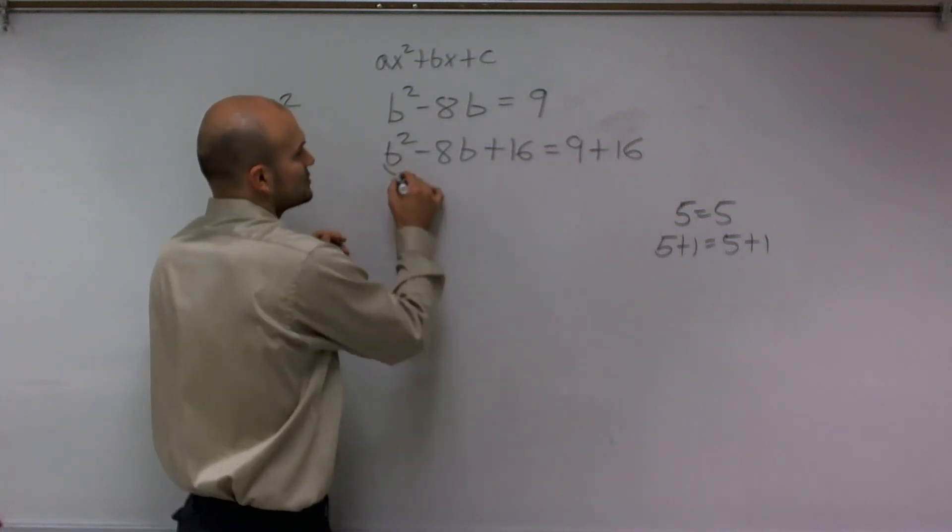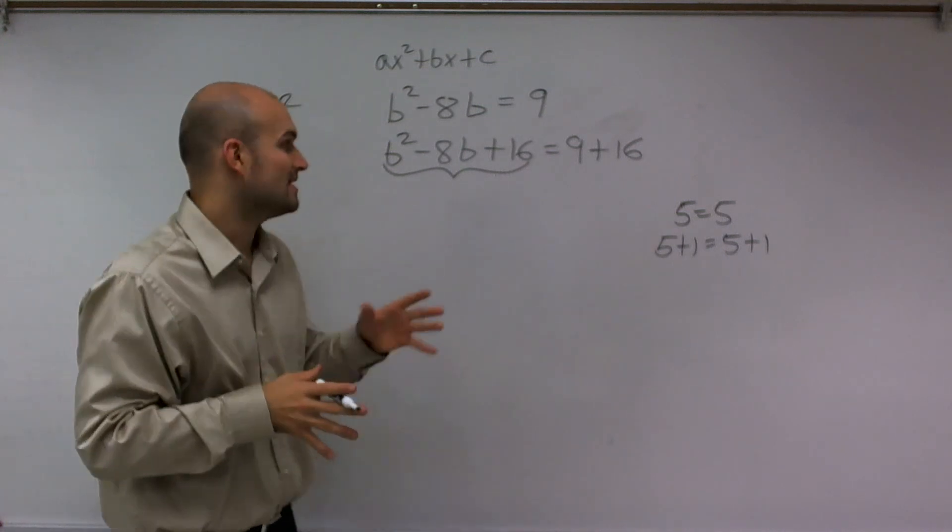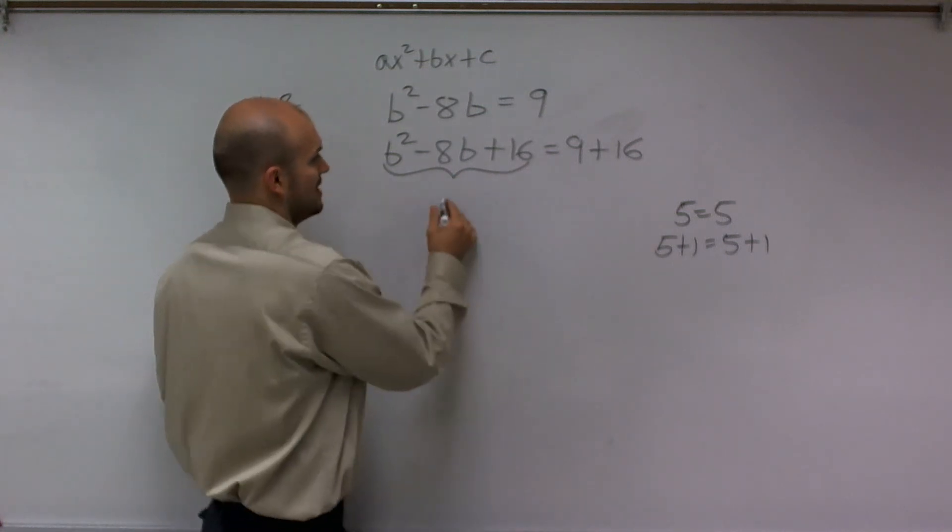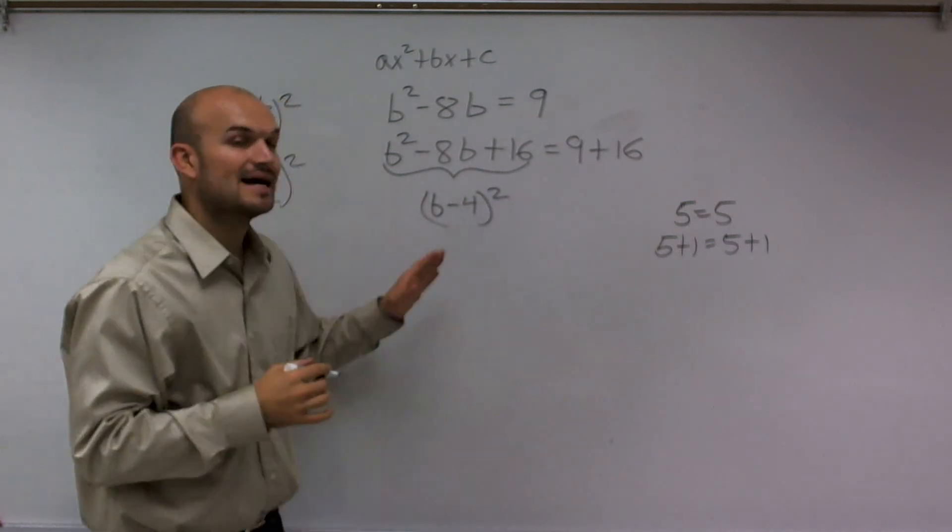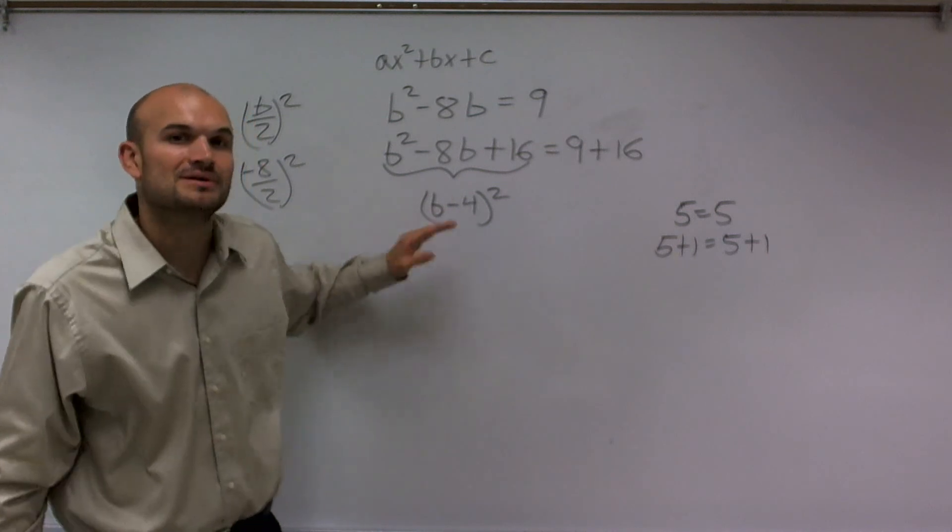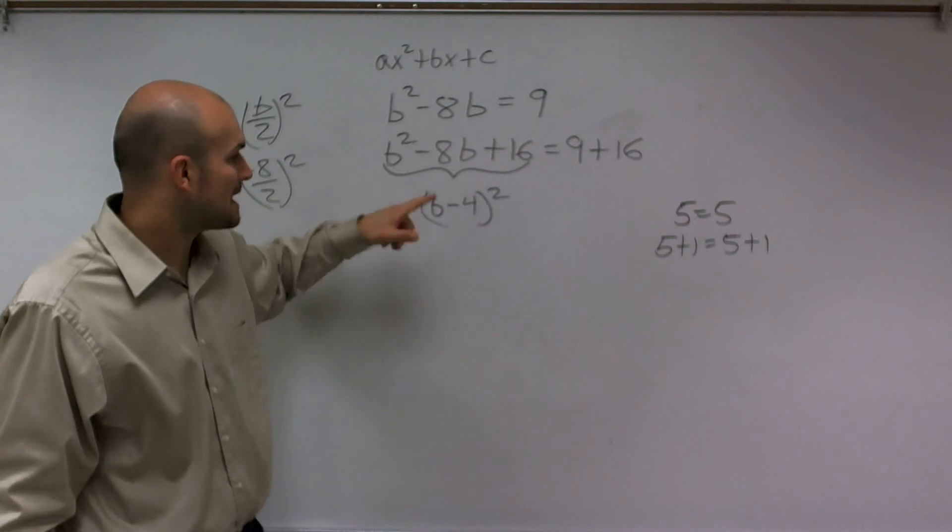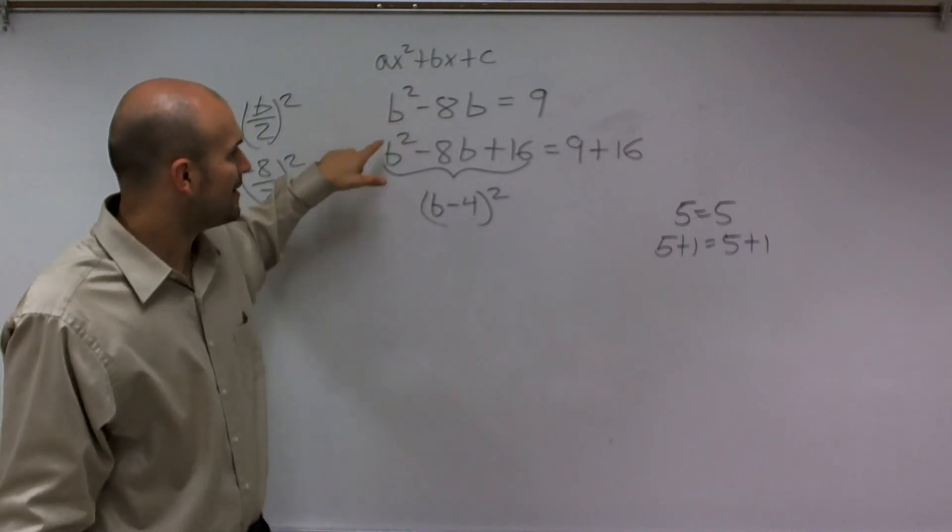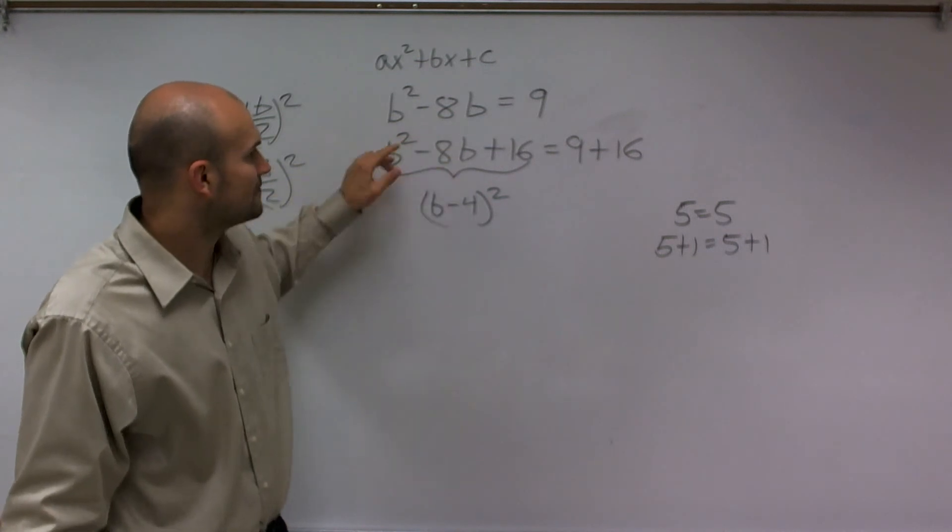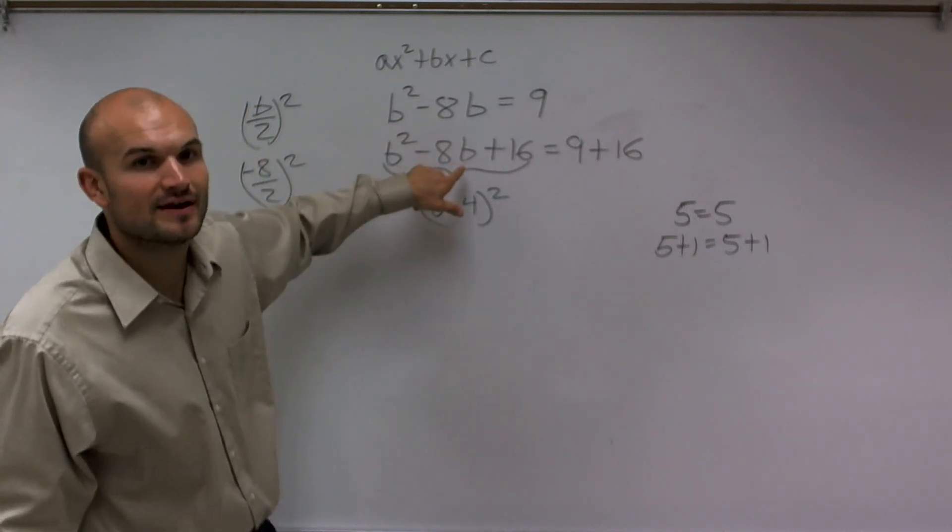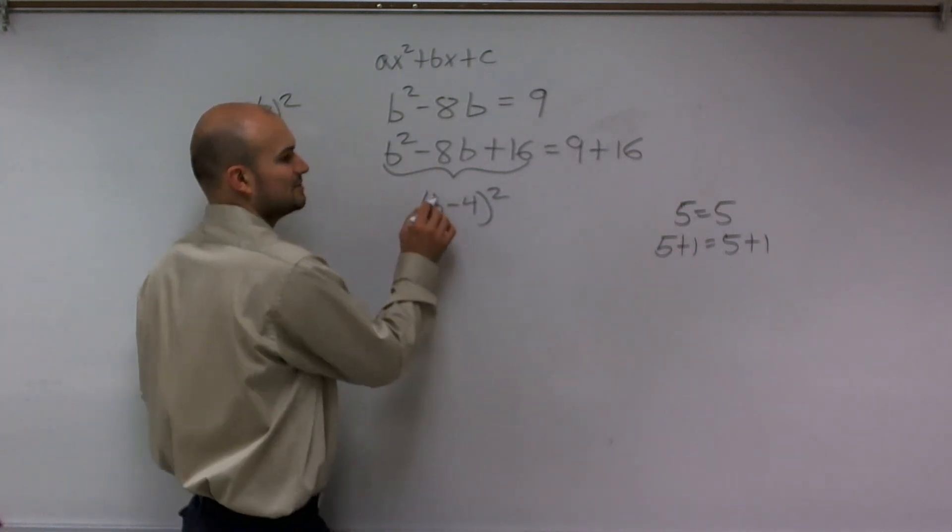Because if you look at this trinomial, it's a perfect square trinomial, meaning I can rewrite this as b minus 4 squared. I can now write this as a binomial squared. What's helpful about writing a trinomial as a binomial squared is I've eliminated the square term with this variable and taken two of my variables down into one. I still have the square, but it's not directly related to this one variable.